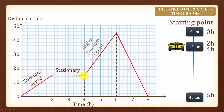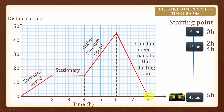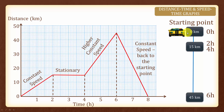Similar to the first part, the car is moving at constant speed. But because the slope is higher, it is moving at a higher constant speed. For the next 2 hours, it moves faster until it reaches 45 km. After this, for the next 2 hours, the car is actually moving at constant speed but back to the starting reference point. So the car is moving back to the original point, and it will end at the 8th hour.